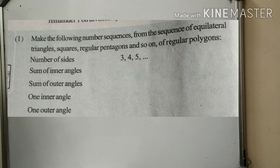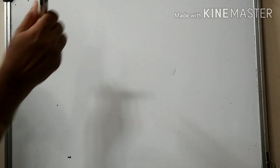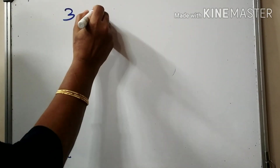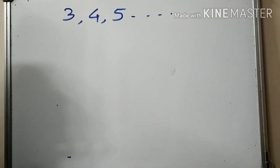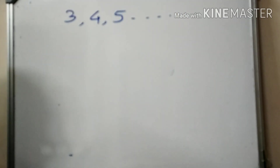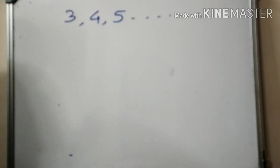Regular polygons have equal angles and equal sides. The number of sides is 3, 4, 5, etc. The sum of inner angles is equal to the angles of one polygon.